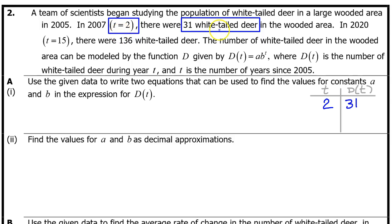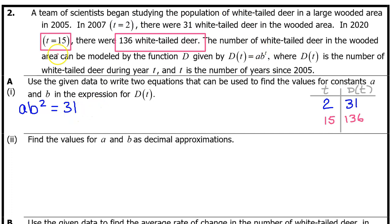Each input-output pair can be used to write an equation. At t equals 2, there were 31 white-tailed deer. We can write the first equation by plugging the input value into the model for t and setting it equal to the output value. Similarly, at t equals 15, there were 136 white-tailed deer, giving us a times b to the 15th power equals 136.